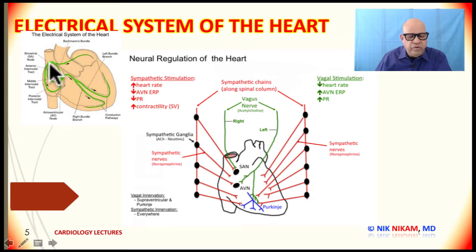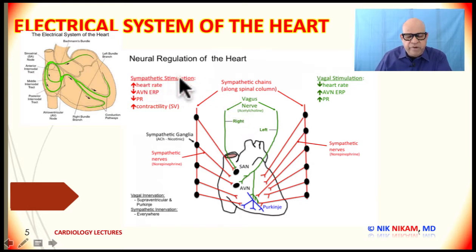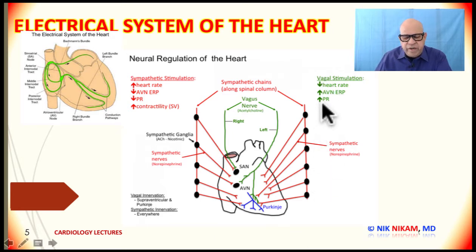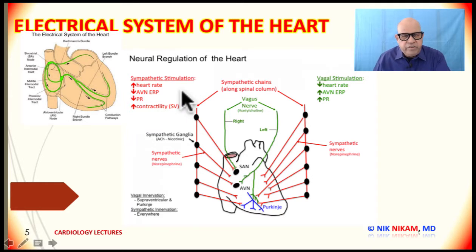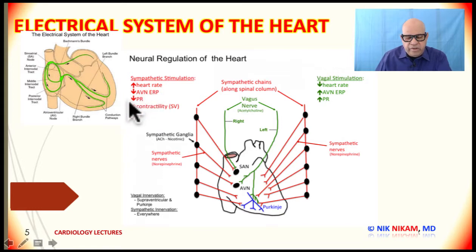What regulates the sinus node and the AV node function? To answer that question we have the autonomic nervous system, consisting of sympathetic stimulation through the adrenaline system and the parasympathetic system through vagal stimulation. Through the release of acetylcholine they very intricately manage the heart rate and rhythm. Stimulation of the sympathetic system releases adrenaline, which can increase the heart rate, increase AV conduction, increase the contractility of the ventricle, and reduce the PR interval.